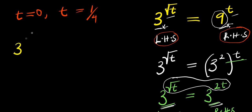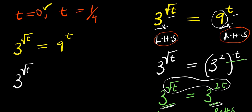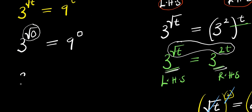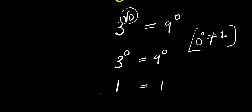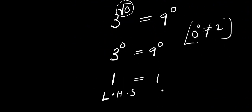Our solutions are t equals 0 and t equals 1 over 4. Starting with t equals 0: we have 3 to the power of square root of 0 equals 9 to the power of 0. The square root of 0 is 0, so this becomes 3 to the power of 0 equals 9 to the power of 0. Any number raised to the power of 0 equals 1 — with the exception of 0 itself. So 3 to the power of 0 is 1 and 9 to the power of 0 is 1, meaning t equals 0 satisfies the equation.